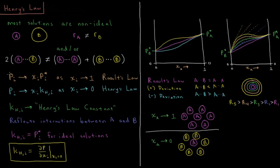From Raoult's Law, the vapor pressure of a substance in the mixture is equal to the mole fraction of component I times the vapor pressure of pure liquid I. This is always true as the mole fraction of I approaches one. As the mole fraction of a component approaches one, everything else in the solution is almost always the same molecule, so A basically only sees other molecules of A. The solution approaches ideal behavior because every particle it interacts with is a particle of itself. So even for non-ideal solutions, as their mole fraction approaches one, they start approaching an ideal Raoult's Law case.